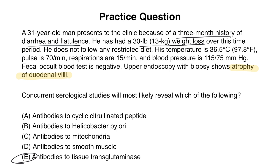The other answer choices are incorrect for the following reasons. Choice A is found in rheumatoid arthritis, which presents with symmetric, tender, swollen, warm joints of the hands and wrists. H. pylori typically presents with gastric and duodenal ulcers, not villous atrophy. Anti-mitochondrial antibodies are found in primary biliary cirrhosis, an autoimmune condition affecting older females and the intrahepatic biliary tract — steatorrhea can occur, but there is no duodenal villi atrophy. Anti-smooth muscle antibodies are seen in autoimmune hepatitis, which more commonly affects females and presents with jaundice, not seen here.